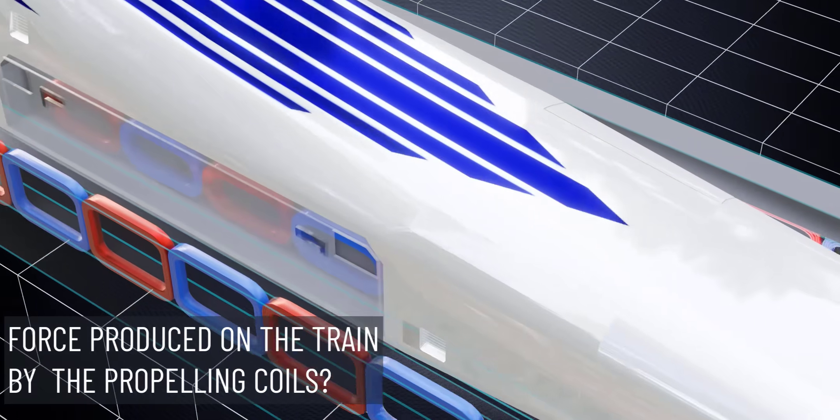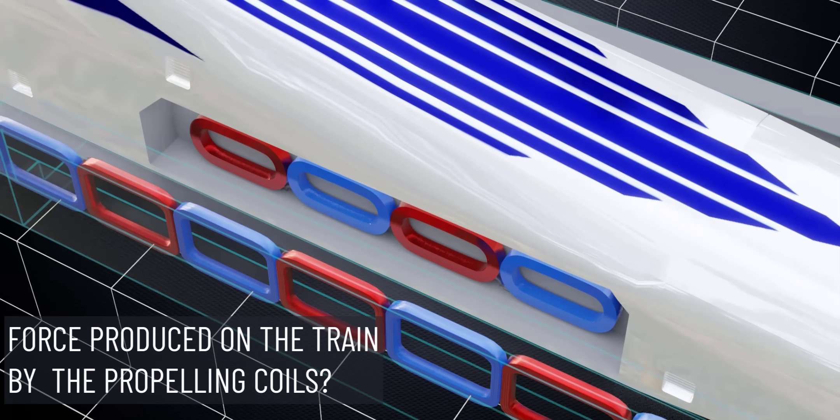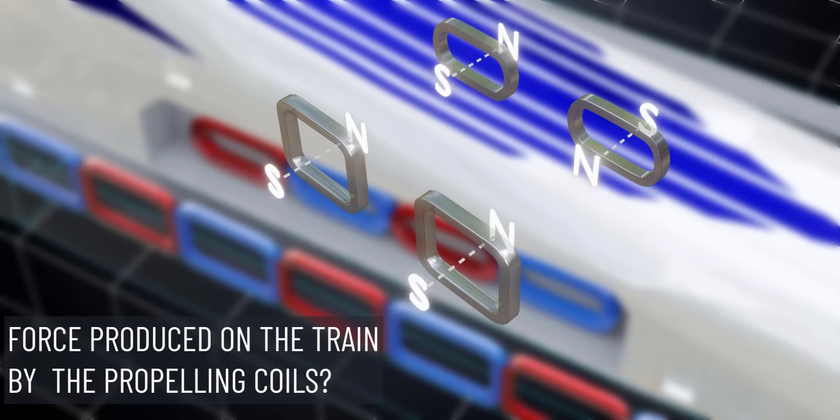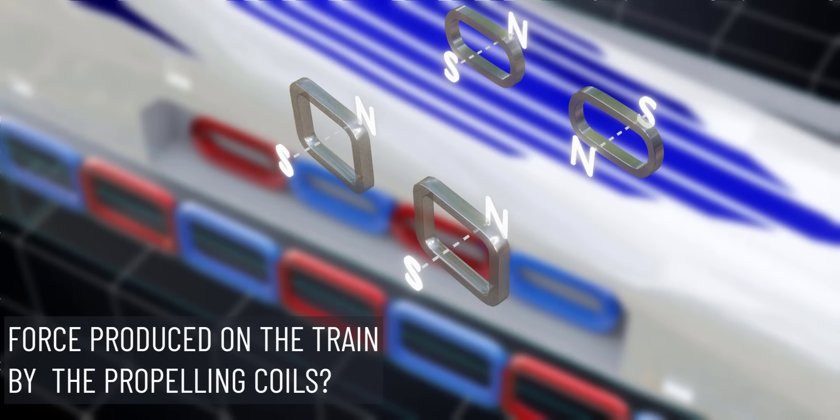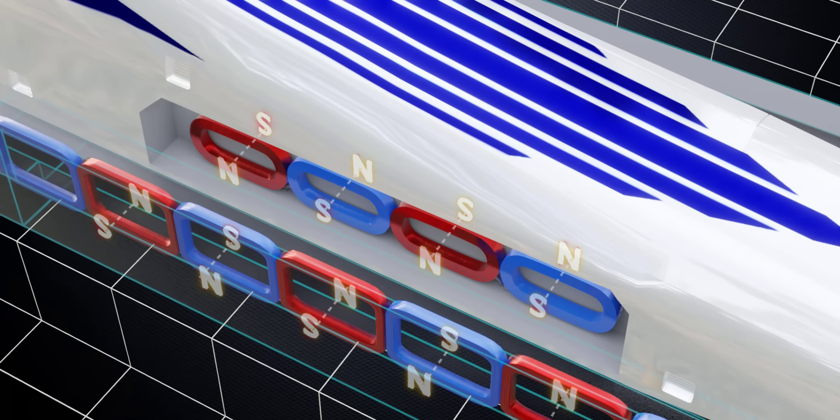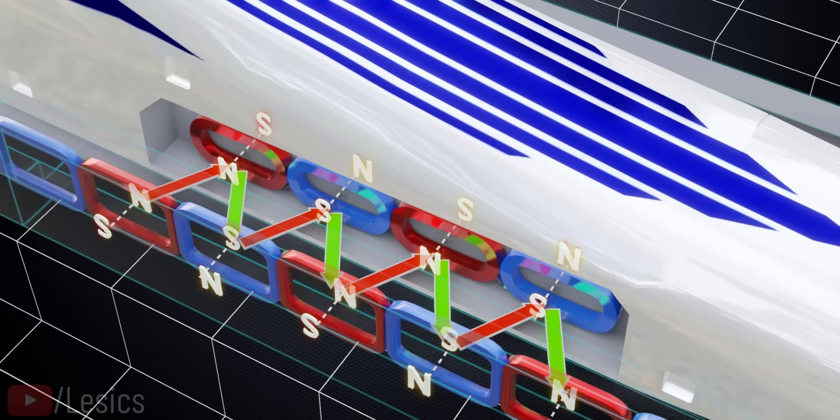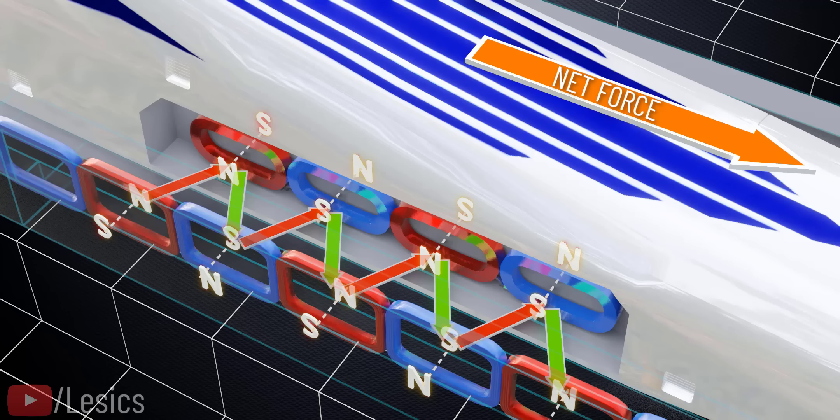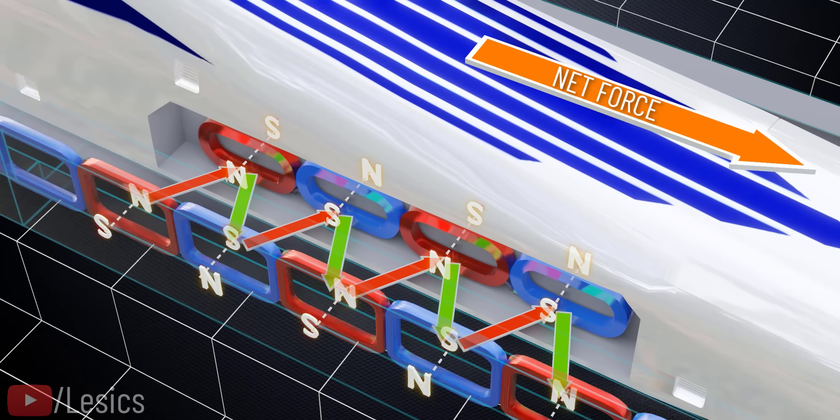Next, we need to find out the force the propelling coils are producing on the train's superconducting magnets. Please note that to understand the direction of force one magnet produces on the other, you just have to consider the nearest poles. In this way, let's analyze the force acting on the superconducting coils due to the propelling coils. If you take the results of all these forces, the net force will be in the forward direction. So the train moves forward.